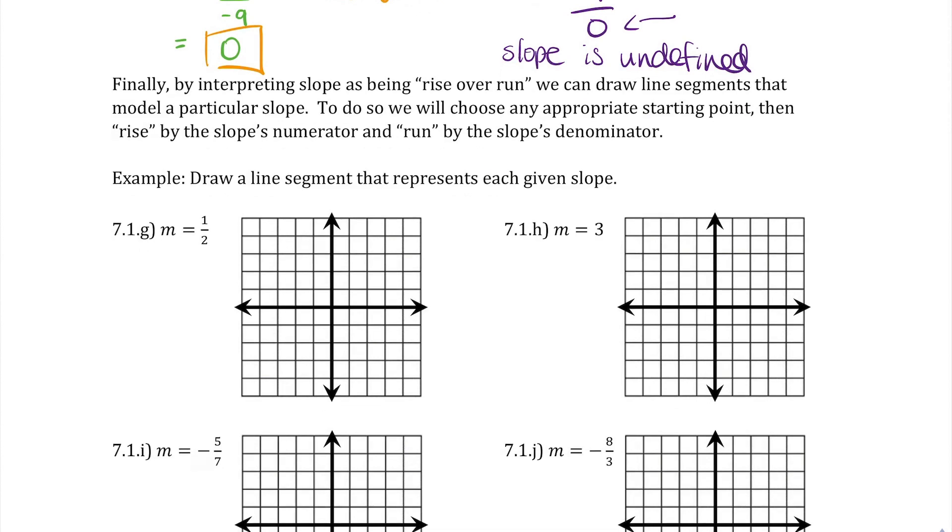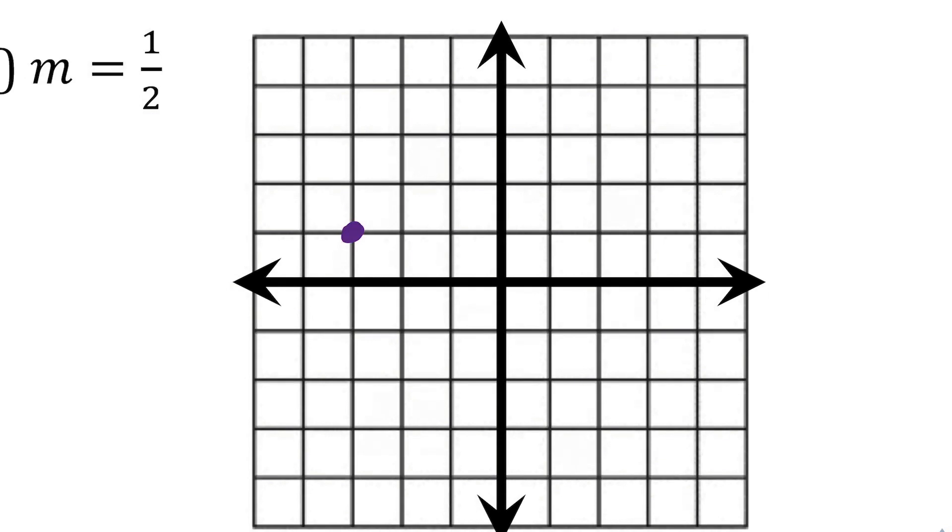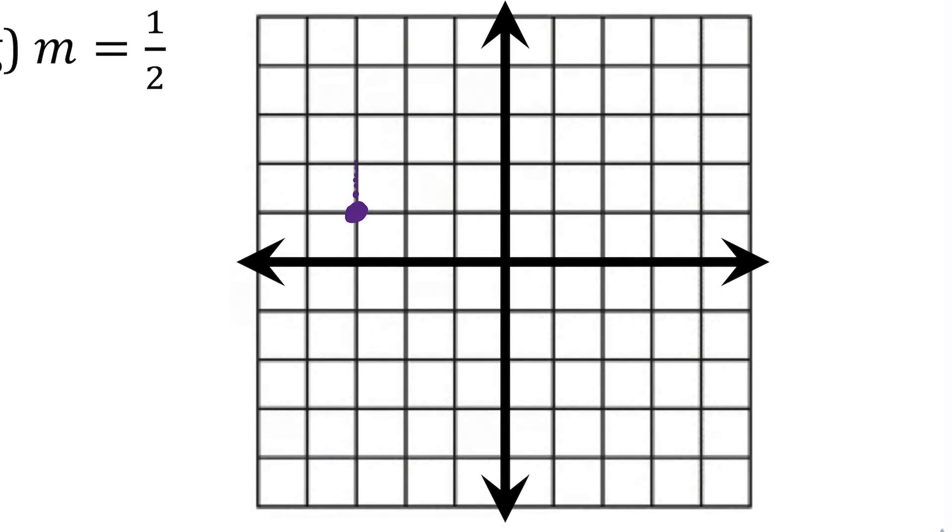So, knowing that slope is rise over run can allow us to actually draw some lines with those slopes. For now, wherever we draw that slope isn't quite so relevant. We just need to pick a point to start and go from there. We will rise by whatever the numerator is and run by whatever the denominator is. So, in this first case, where the slope's one half, let's make a starting point. In order to get to the next point, we will rise by 1, and run by 2. Always going left to right whenever we run. So, there's our next point. And if we play Connect the Dots, nice straight line. That line has a slope of 1 over 2.